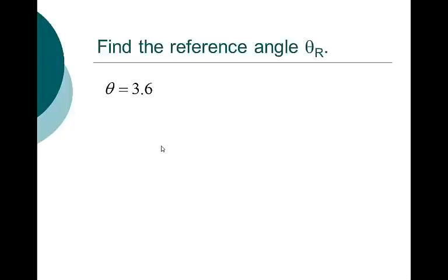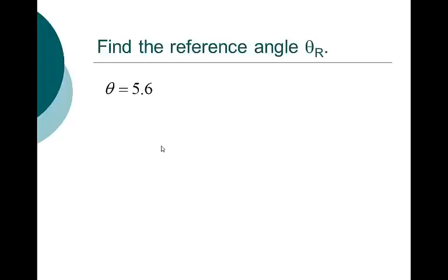3.6 is between 3.14 and 4.71, so that's in quadrant 3. I take 3.6 minus pi and get 0.4584 — that's your reference angle. And if we end up in quadrant 4, 5.6 is between 4.71 and 6.28, so I take 2 pi minus 5.6 and get 0.6832.